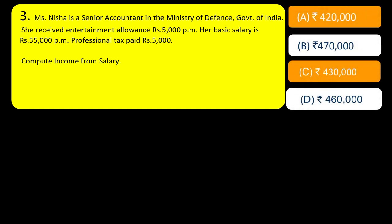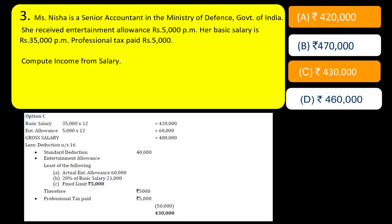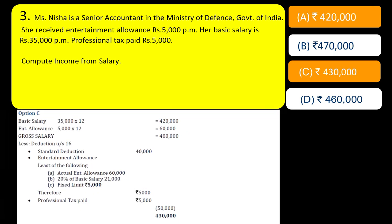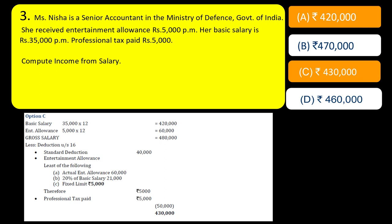Basic salary is fully taxable — Rs. 35,000 into 12 = Rs. 4,20,000. Entertainment allowance is also fully taxable; later, because she is a government employee, we will give her a deduction as well. No other components are received. The professional tax was paid by her — not by the employer, since the question doesn't mention the government paid it. So she receives just two things: basic salary and entertainment allowance, giving a gross salary of Rs. 4,80,000.